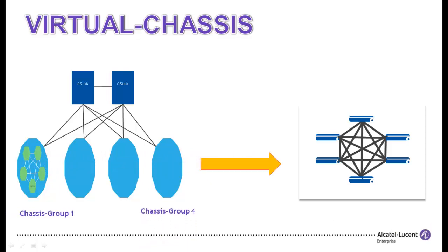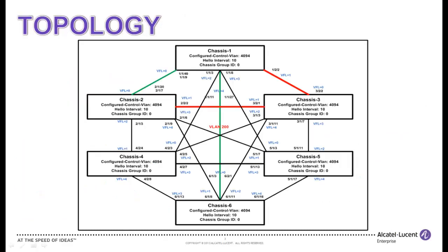Starting from release OS 7.3.3 R01, Alcatel Lucent OS 6900 switches are equipped with the capability of operating 6 physical switches as one logical switch. In this sample topology, the red colored links represent 40GB links, the green colored links represent two 10GB links, and the black colored links represent a single 10GB link. However, it is recommended not to have both 40GB link and 10GB link as part of the same virtual fabric link.